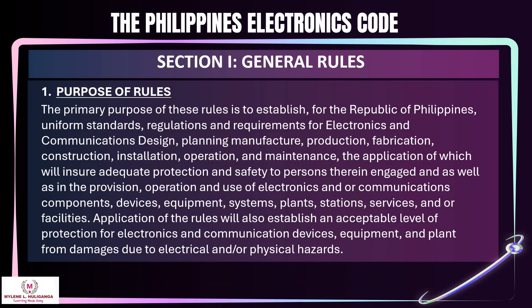Philippine Electronics Code, Section 1 — General Rules. Purpose of Rules: The primary purpose of these rules is to establish for the Republic of the Philippines uniform standards, regulations, and requirements for electronics and communications design, planning, manufacture, production, fabrication, construction, installation, operation, and maintenance, to ensure adequate protection and safety to persons engaged therein, as well as in the provision, operation, and use of electronics and/or communications components, devices, equipment, and plant from damages due to electrical and/or physical hazards.